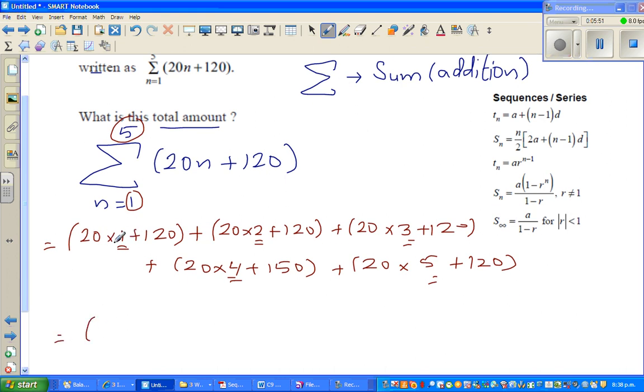Now you can simply substitute or simplify. This is 20 times 1 is 20 plus 120 is, you can see a pattern there, this is 140. Plus this is 40 plus 20 times 2 is 40 plus 120 is 160. This is 120 plus 60 which is 180. Can you see a pattern there? 140, 160, so even if you don't do the next would be 200.